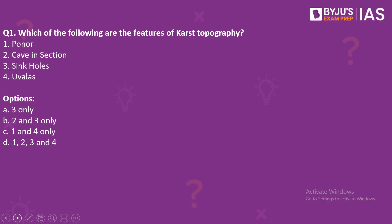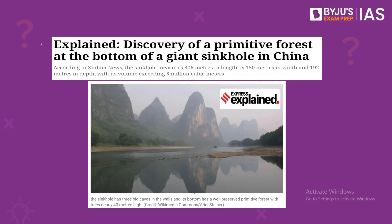Which of the following are the features of Karst Topography? Number 1: Ponor, Number 2: Cave-in Section, Number 3: Sink Holes, Number 4: Uvalas. Why this question? An article in the Indian Express today talks about a discovery of a primitive forest in China, discovered under a giant karst sinkhole in Ley County. Sinkholes are depressions formed when layers of the earth's surface collapse into caverns, and they typically form in areas of karst terrains.